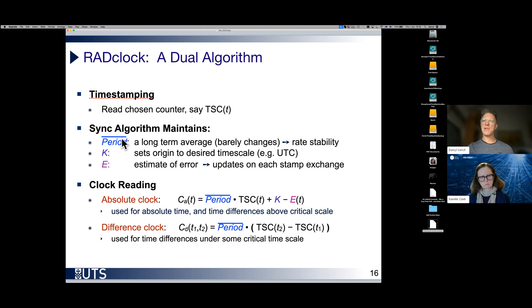The synchronization algorithm maintains these three parameters. Period is a long-term average period of the counter. K is a big fat constant to align you with the arbitrary agreed UTC timescale. And E is an estimate of an error in that naive clock, which you then subtract to get you the best clock that you can. So this is what you do in the absolute clock.